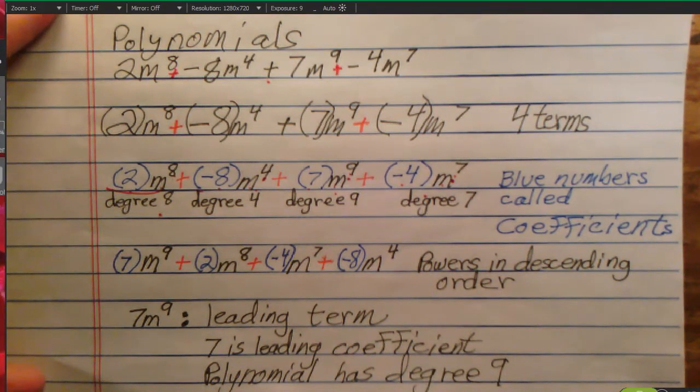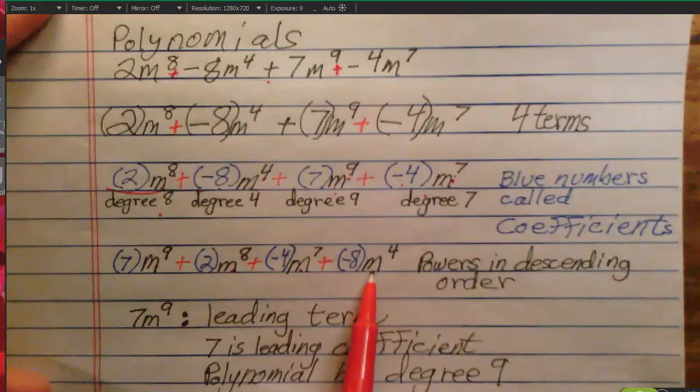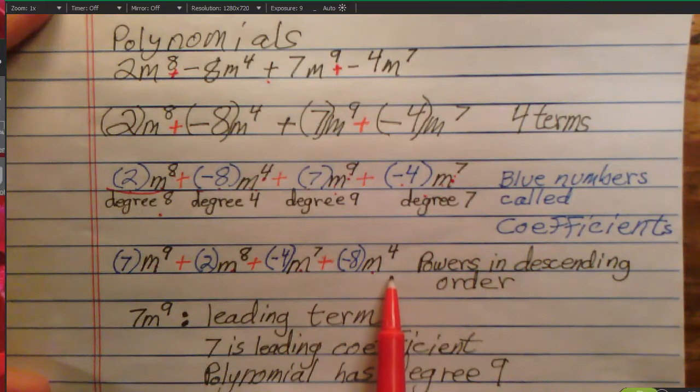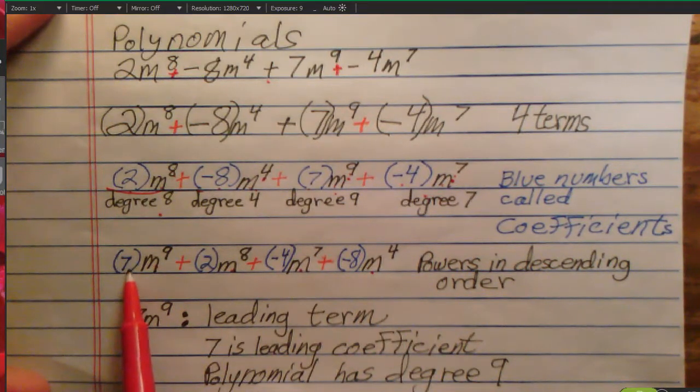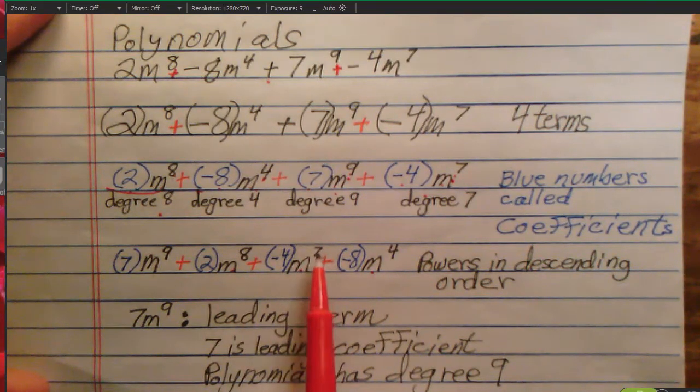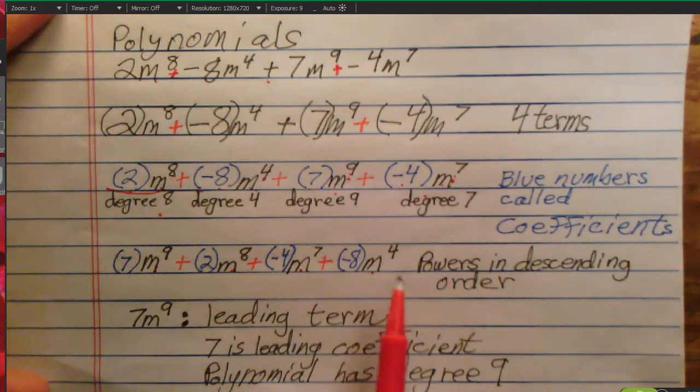We always or almost always write polynomials in descending order of powers, of degrees. So, since degree 9 is higher than degree 8 and degree 8 is higher than degree 7 and degree 7 is higher than degree 4, I'm going to rewrite these terms in this order. And now we have 7m to the ninth plus 2m to the eighth plus negative 4m to the seventh plus negative 8m to the fourth.